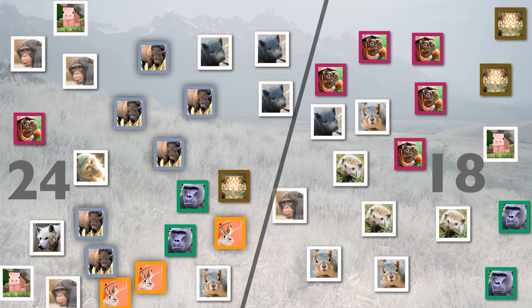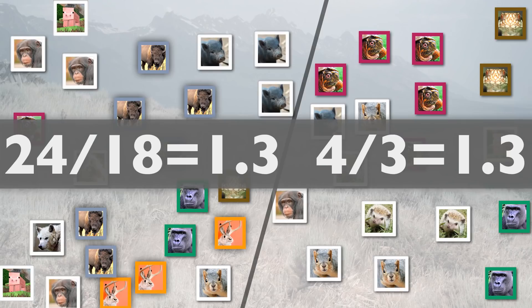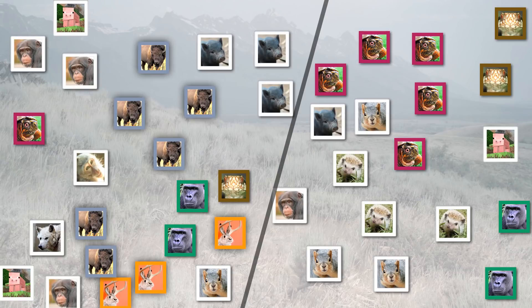Let's double-check: there are 24 voters on the left and 18 voters on the right. 24 divided by 18 gives us 1.3, and 4 divided by 3 also gives us 1.3. So we've drawn this line in the right spot.